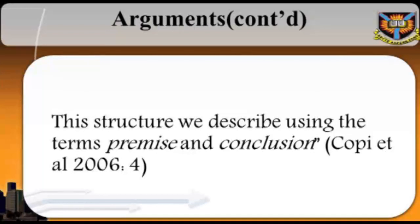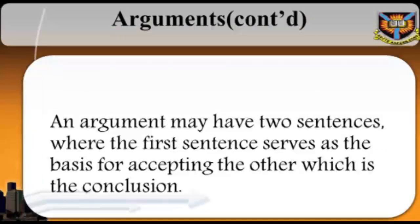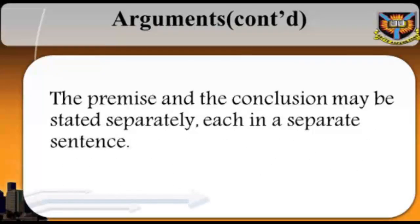Thus, the premise is a proposition used in an argument to support some other proposition, while the conclusion is a proposition in an argument that the premise supports. Where there is no relationship whatsoever between the purported claim or conclusion and the reasons given for its acceptance, then there is no argument. An argument may have two sentences, where the first sentence serves as the basis for accepting the other, which is the conclusion. In other words, the premise and the conclusion may be stated separately, each in a separate sentence.